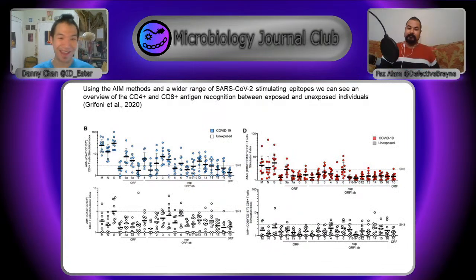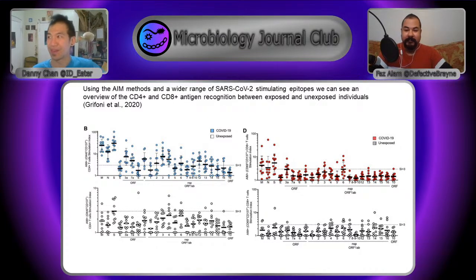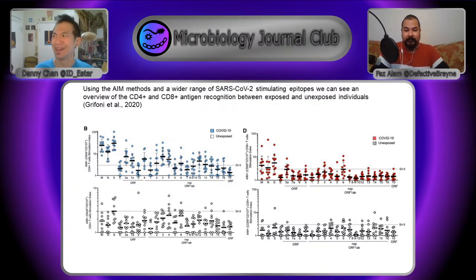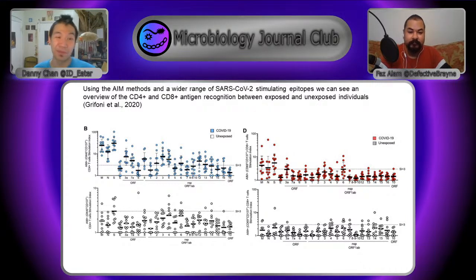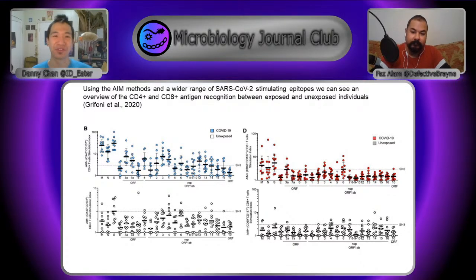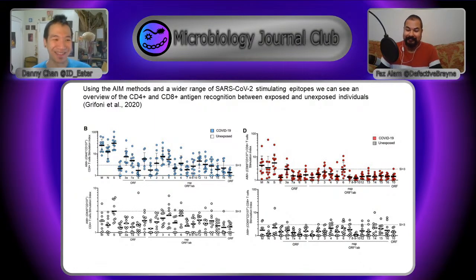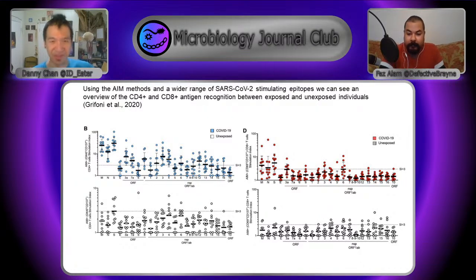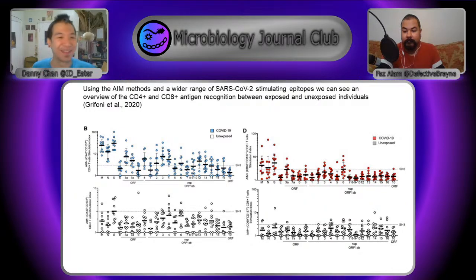They applied the AIM technique across a whole panel of SARS-CoV-2 genes. The confusing result of healthy serum responding to these antigens might be explained by cross-reactivity with seasonal coronaviruses. The AIM method does yield sensitive results showing more reactivity in infected cell populations than uninfected ones. But the authors wanted more information — and that's where this paper begins.